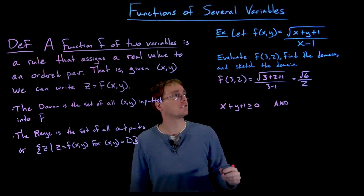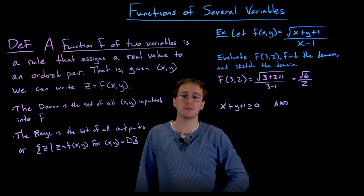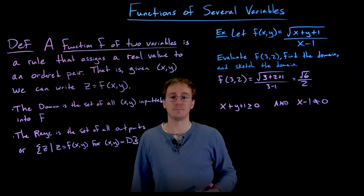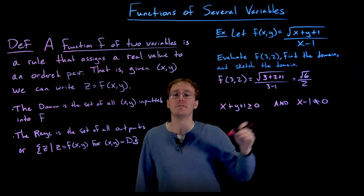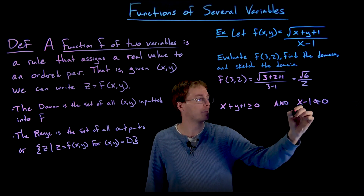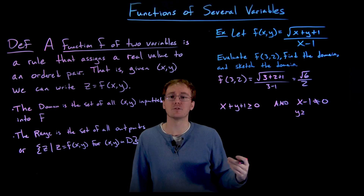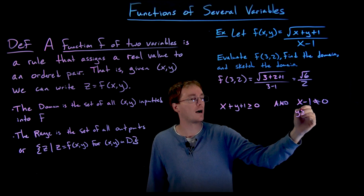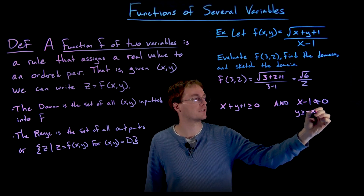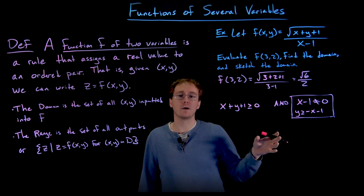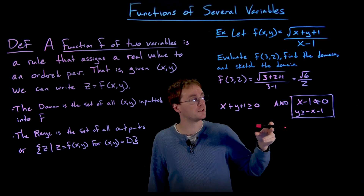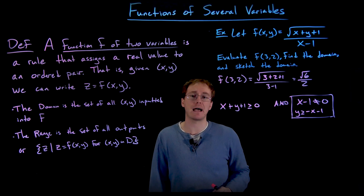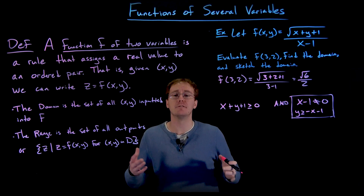At the same time, the denominator must never equal zero, so we also require x minus one to not equal zero. This gives us a description of the domain. Rearranging the first inequality into slope-intercept form, we get y is greater than or equal to negative x minus one. So the domain is the set of all points x comma y such that x is not equal to one, and y is greater than or equal to negative x minus one.